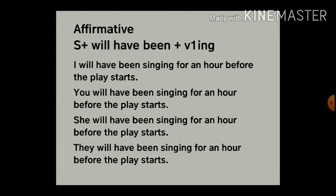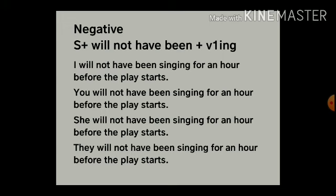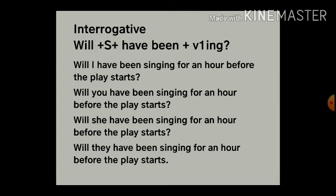Now see the positive structure: subject plus will have been plus V1 plus ing. 'I will have been singing for an hour before the play starts.' 'You will have been singing for an hour before the play starts.' 'She will have been singing for an hour before the play starts.' 'They will have been singing for an hour before the play starts.' For the negative structure, we add 'not' after the helping verb 'will': 'I will not have been singing for an hour before the play starts.'